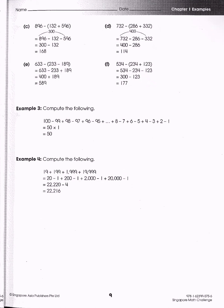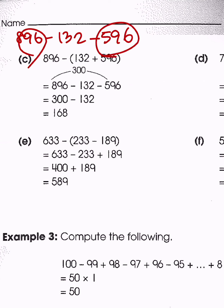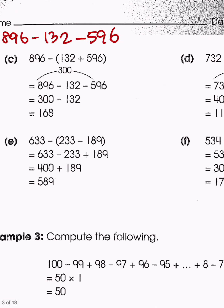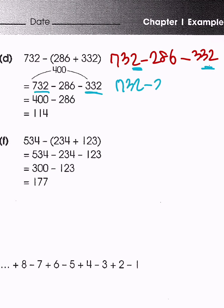We have distribution of a negative sign, giving us 896 minus 132 minus 596. These two both end in 6, so we do those together: 896 minus 596 gives 300, and 300 minus 132 gives 168. Then distributing gives us 732 minus 286 minus 332. These two numbers both end in 2, so doing those first gives 400 minus 286, which equals 114.